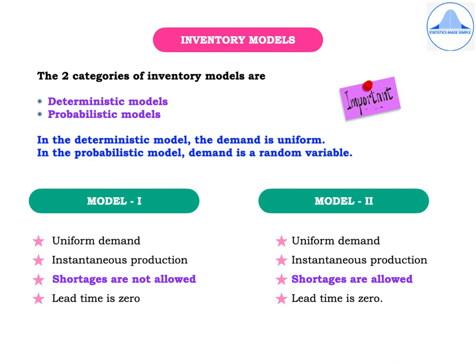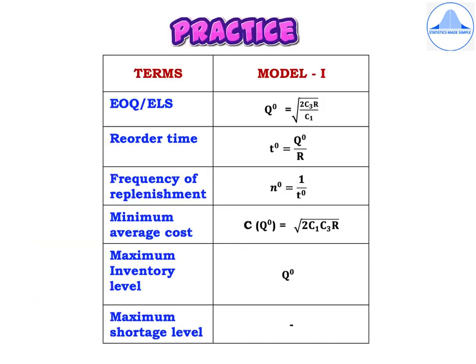In Model 2, again there is uniform demand and instantaneous production, but shortages are allowed and lead time is 0. So it is important to differentiate between Model 1 and Model 2. In this slide, I explain the different terms in Model 1 and the formulae associated with each one of them.